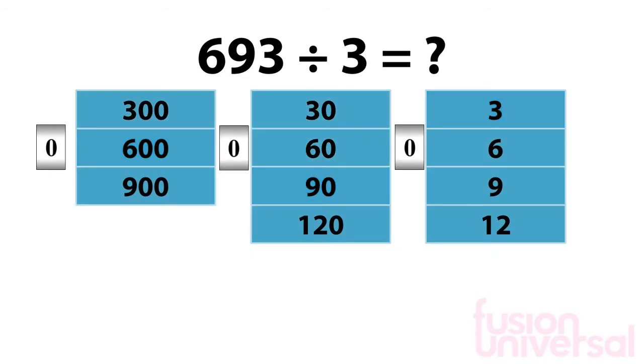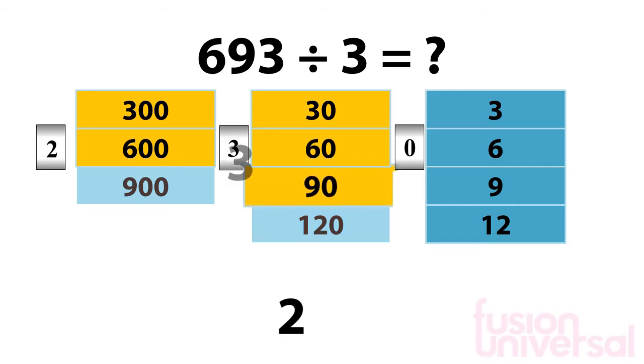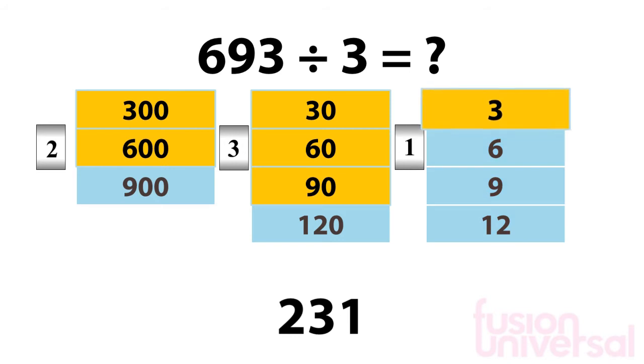We can use this process to work out the answer. We can count down each place value to build up our answer. We count down 2 to get to 600. We count down 3 to get to 90. And we count down 1 to get to 3. Putting these numbers together, we get our answer.